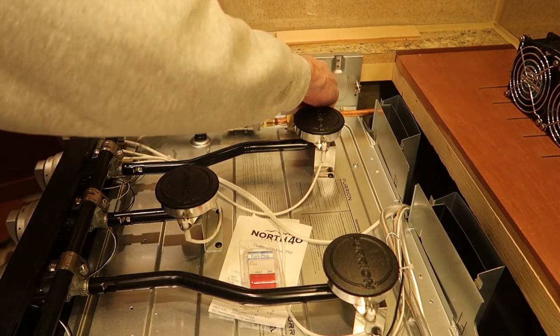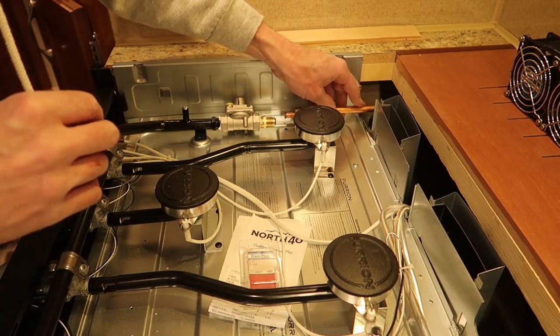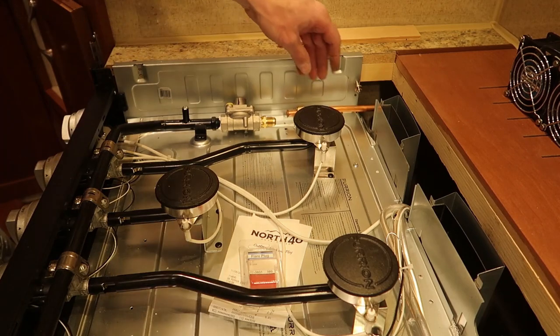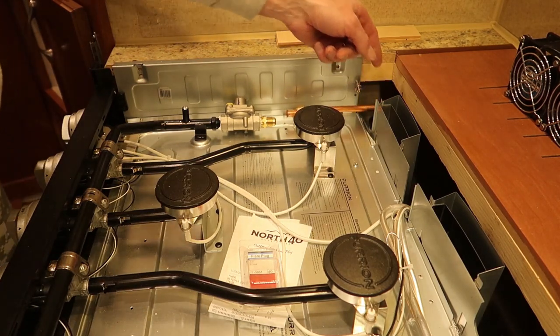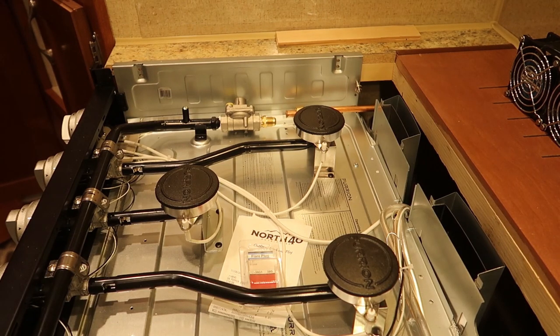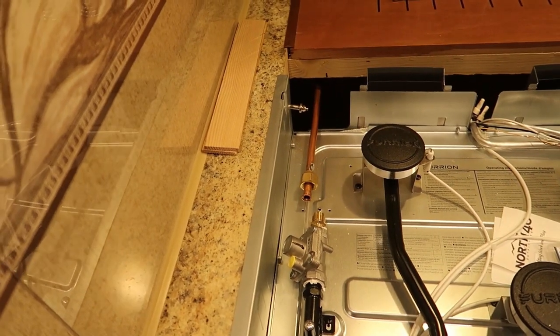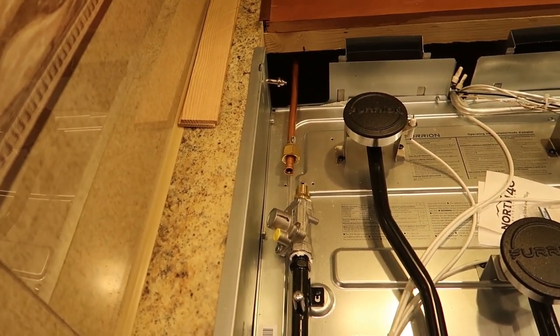Now we'll make my propane line connection. I might slide the oven back out just a little bit and put a little bit more of a bend in that propane line so that it lines up better. As you can see, it's kind of over to the left just a little bit and it might be just a little bit on the high side too. So that'll be really easy to fix.